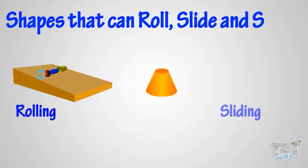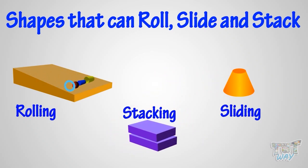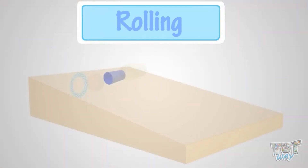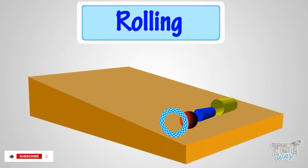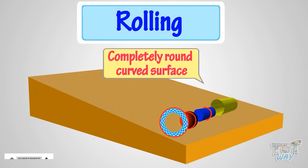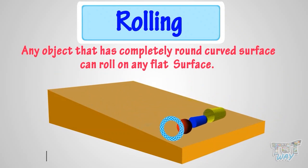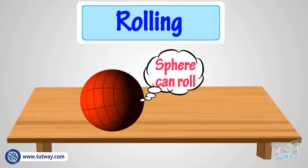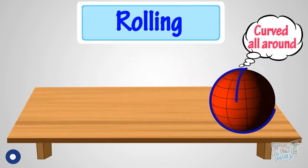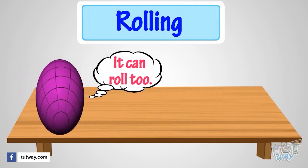Shapes can roll, slide, or can be stacked upon each other. So let's get started. This is rolling — any object that has a completely round curved surface can roll on any flat surface. Now let's see a few shapes that can roll. A sphere can roll as it is curved all around. This is an ellipsoid — it can roll too, as it is curved all around.